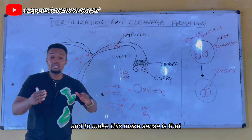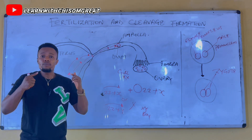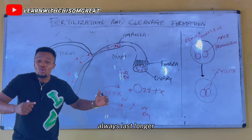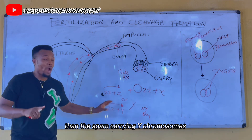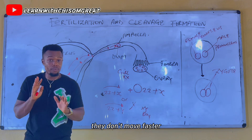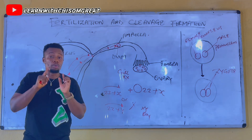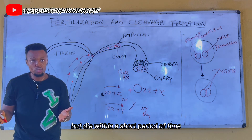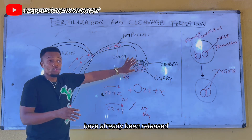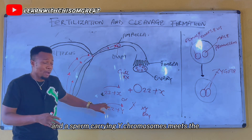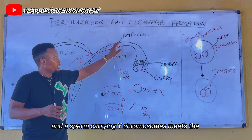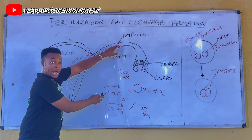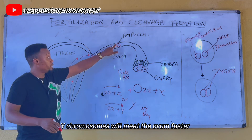The sperm carrying the X chromosome always lasts longer than the sperm carrying the Y chromosome — they are slow, they don't move fast but they last longer. The sperm carrying the Y chromosome moves very fast but dies within a short period of time. So if the egg has already been released and a sperm carrying the Y chromosome is present, it will reach the ovum faster.